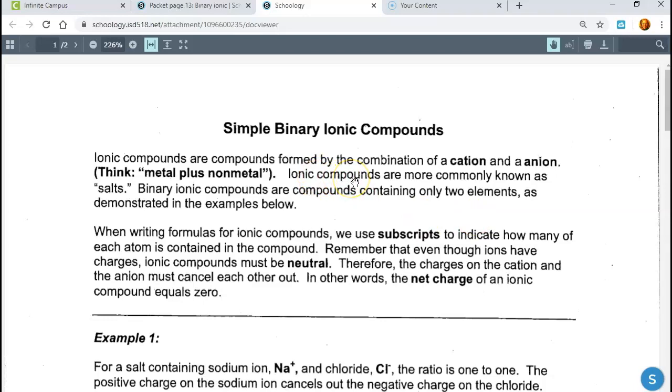Ionic compounds are more commonly known as salts. There's the salt that you put on your French fries, sometimes we call it table salt. There's lots of different kinds of salt. We use different kinds of salt to melt ice in the wintertime, different kinds of salt in your water softeners in your houses. The French fry salt is just one kind of salt.